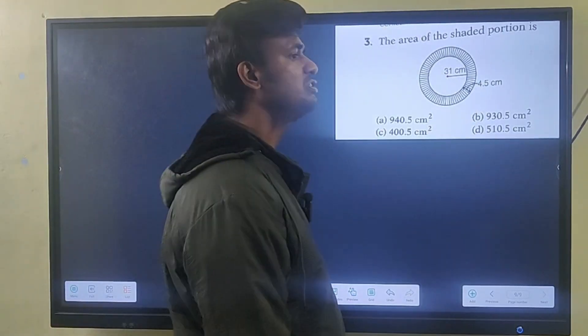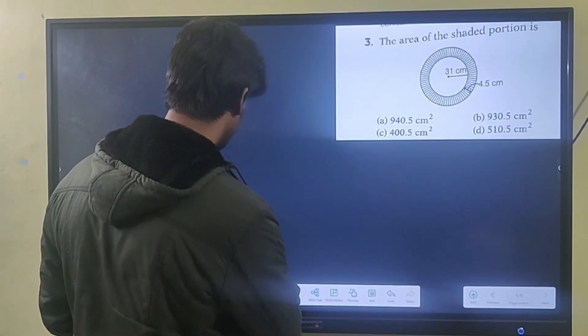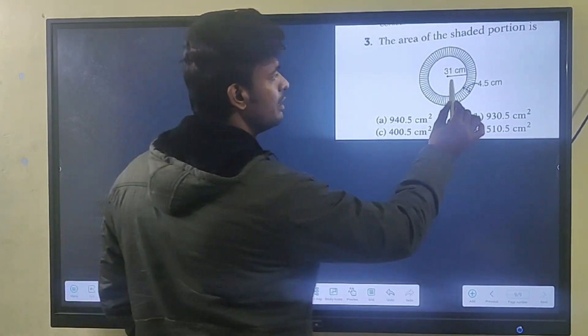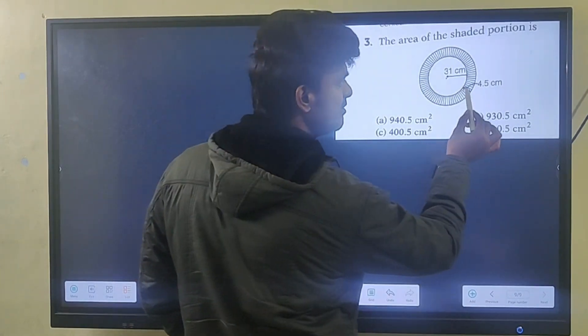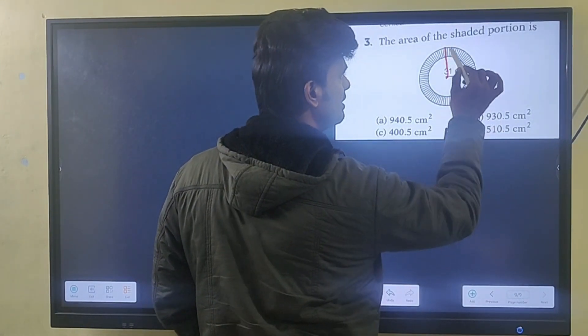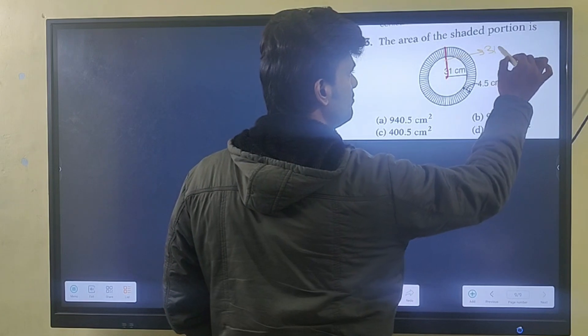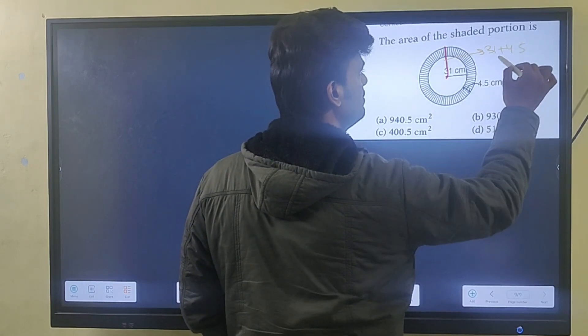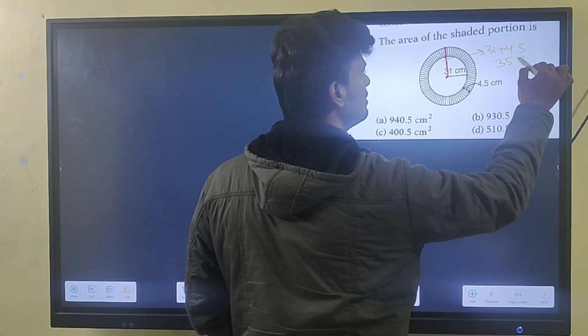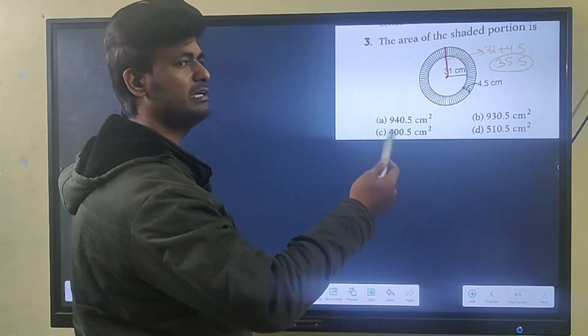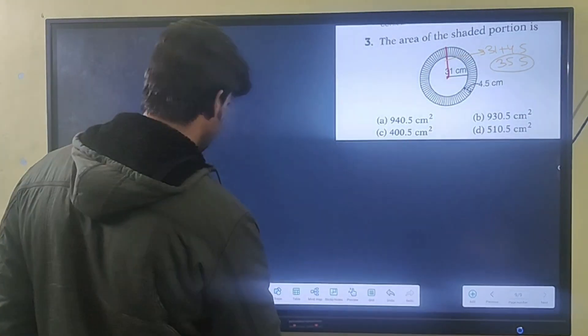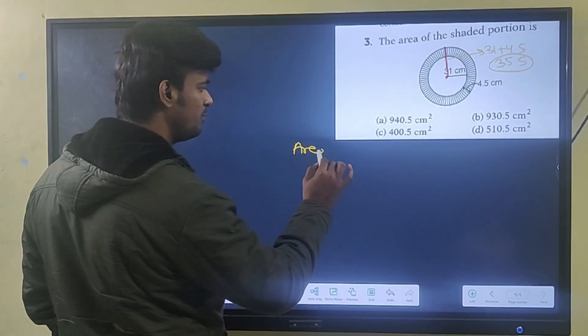The area of the shaded portion - the radius 31, plus 4.5 gives 35.5. We need to find the area of the shaded portion.